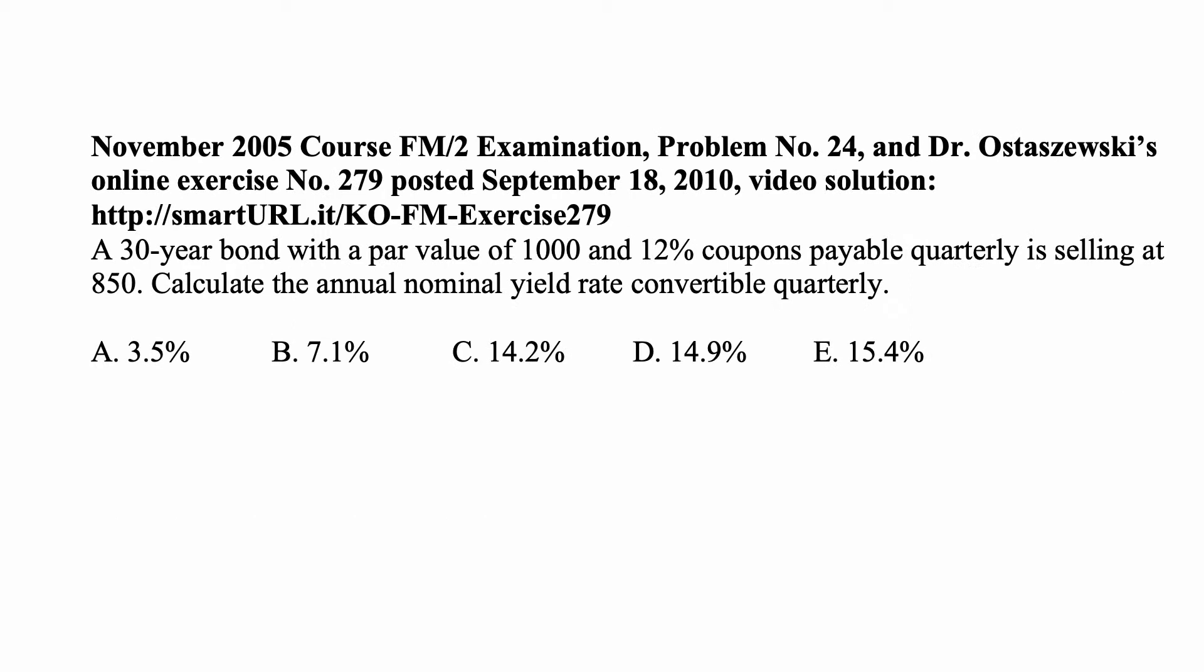Here's a problem for today for exam FM on financial mathematics. A 30-year bond with a par value of $1,000 and 12% coupons payable quarterly is selling at $850. Calculate the annual nominal yield rate convertible quarterly.